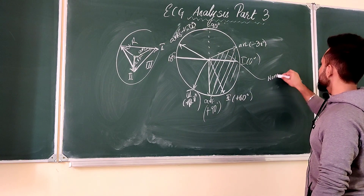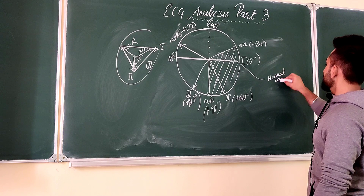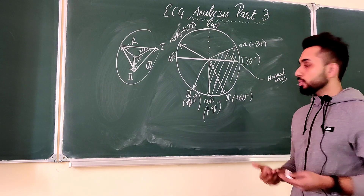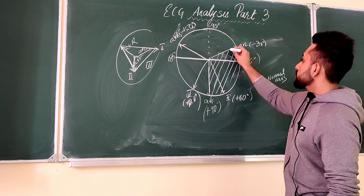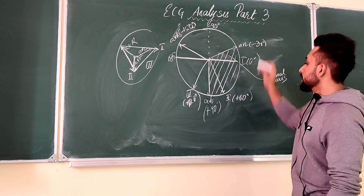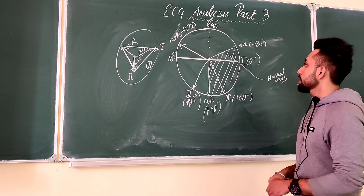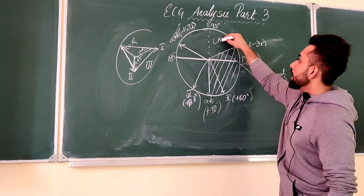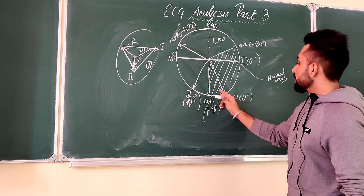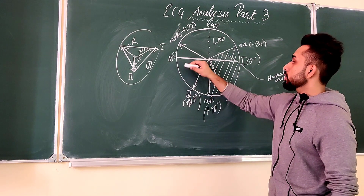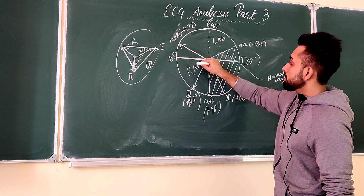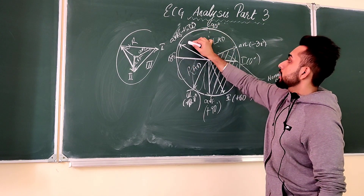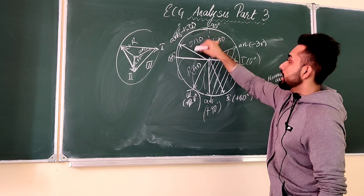The portion from minus 30 degrees to positive 90 degrees is the normal axis. If the heart is functioning properly and you get the ECG strip of your patient, the cardiac axis should lie between minus 30 degrees and positive 90 degrees. If it lies from minus 30 to minus 90 degrees, this is left axis deviation. If it lies from positive 90 to positive 180 degrees, that is right axis deviation. And if it is from minus 90 to 180 degrees, that is extreme axis deviation, or EAD.